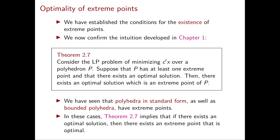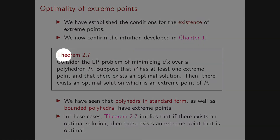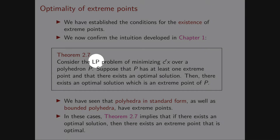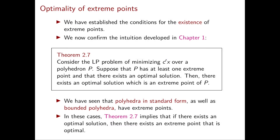The first result that we're going to see in this video is Theorem 2.7. Let's read through this theorem. Consider the LP problem of minimizing C transpose X over a polyhedron P. Suppose that P has at least one extreme point and that there exists an optimal solution. Then there exists an optimal solution which is an extreme point of P.